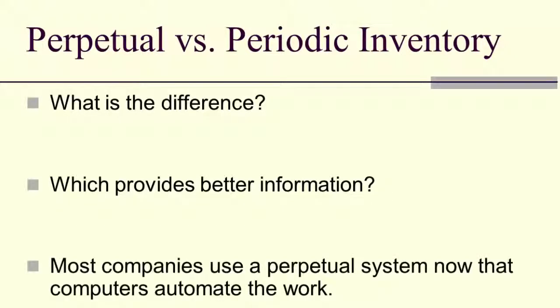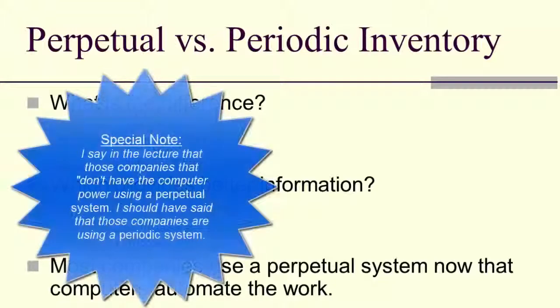And nowadays, most companies do use a perpetual system because computers make it relatively simple to keep track of inventory as you scan it in and then scan it out. Usually, periodic systems are for smaller businesses or for businesses that have some other problem or difficulty that keep them from wanting to scan it. It's hard to scan a building, for example. Most of the time what we see is just small businesses that don't have the computer power using a periodic system.